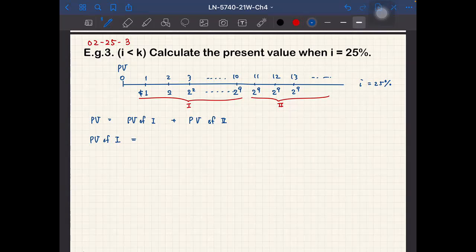So this is the geometric sequence, geometric annuity, geometric progression annuity. Obviously i is equal to 25% because it's given. And what is K? So K is actually equal to 1 or 100%.